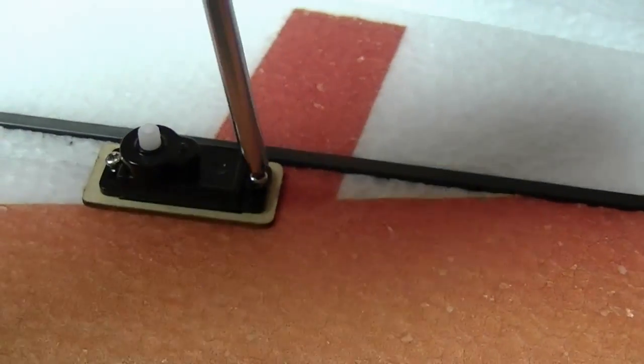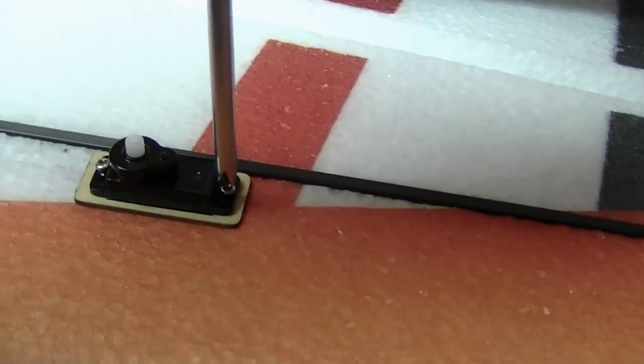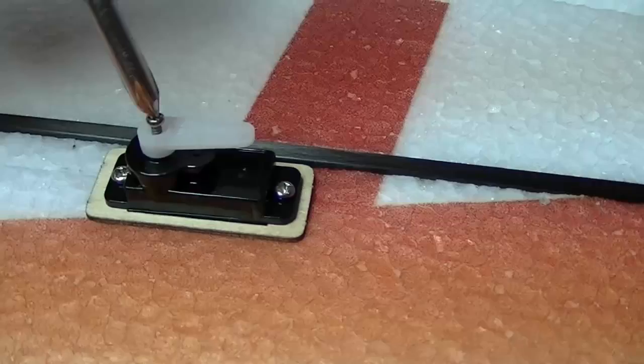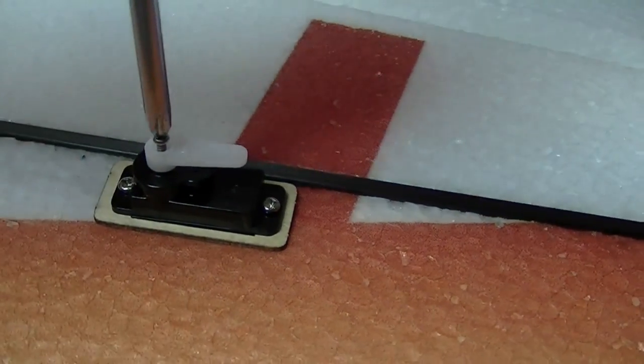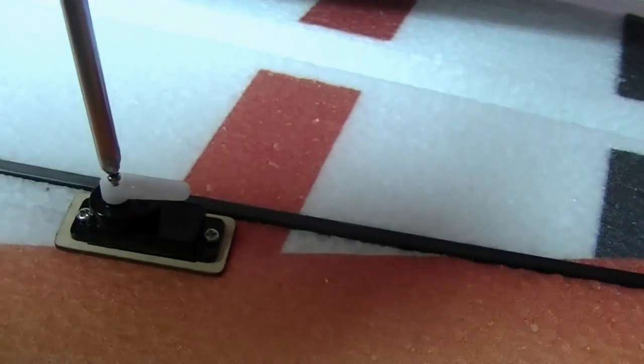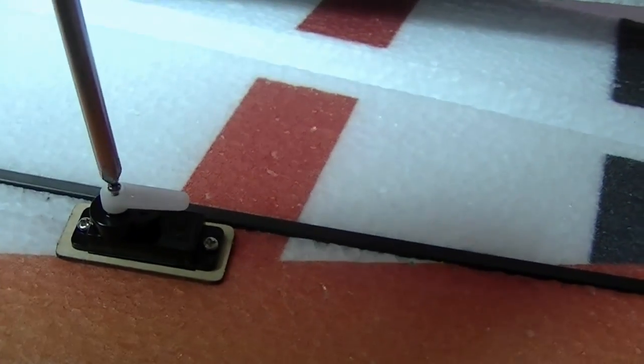Just going around all the servos and putting the screws in that I left out. I'm going to put the servo arms on too and fasten them down. I don't want to lose that tiny little screw that comes with each servo arm, so this is a good way to keep it.